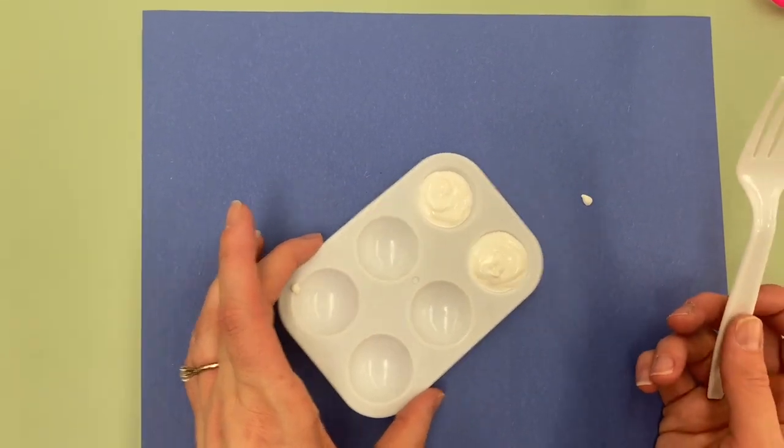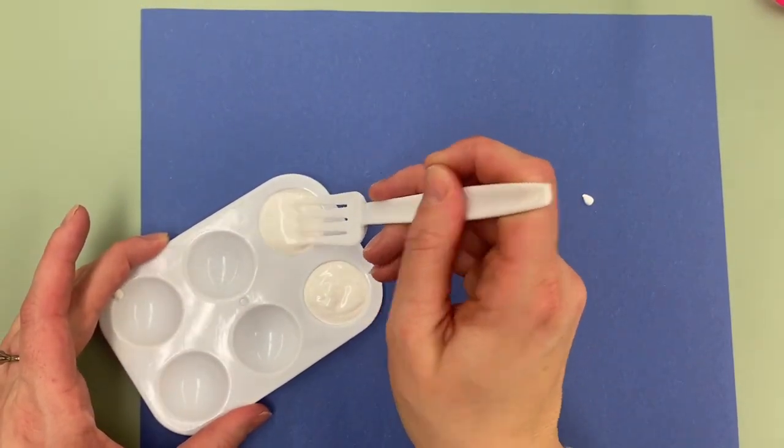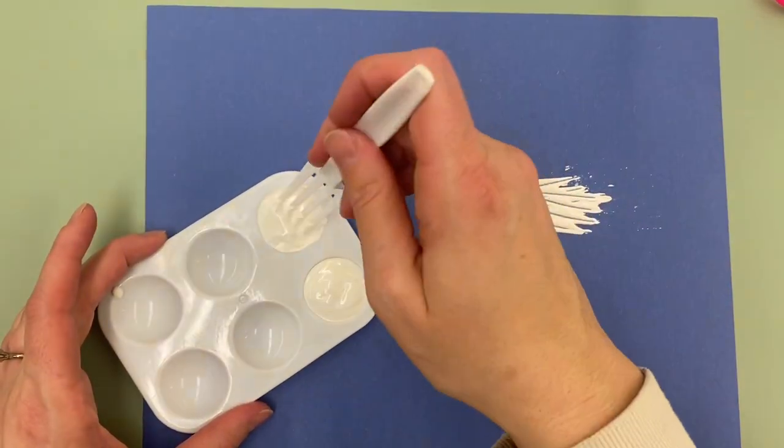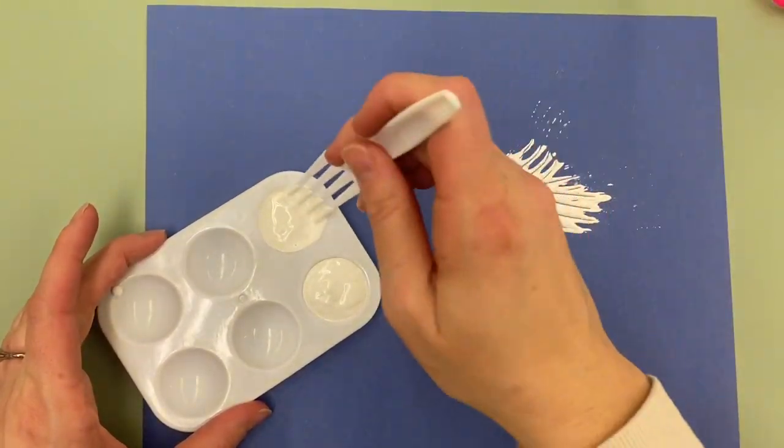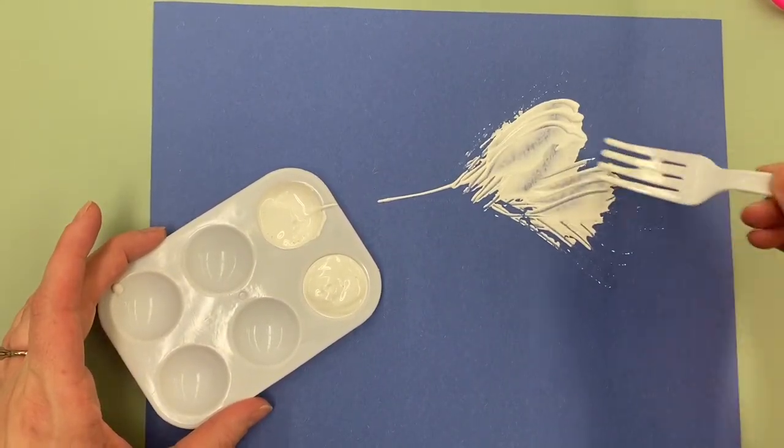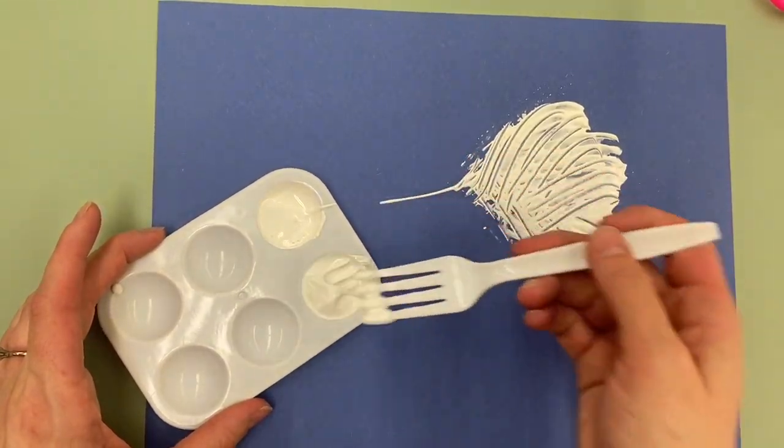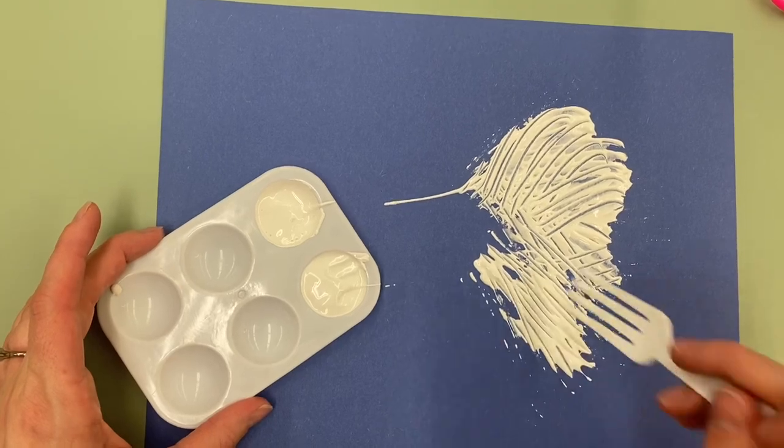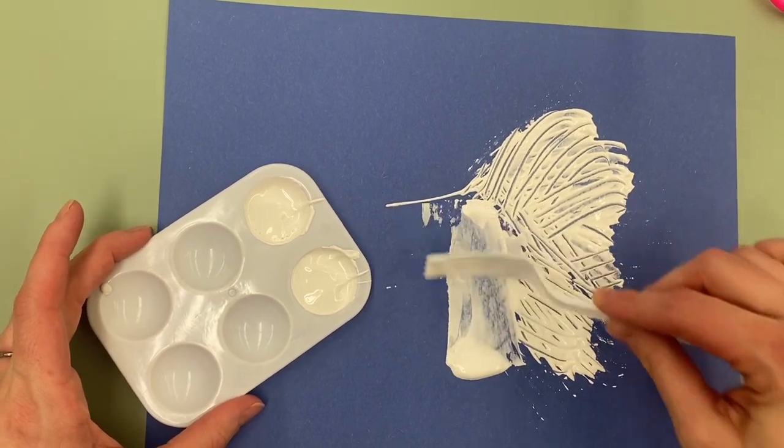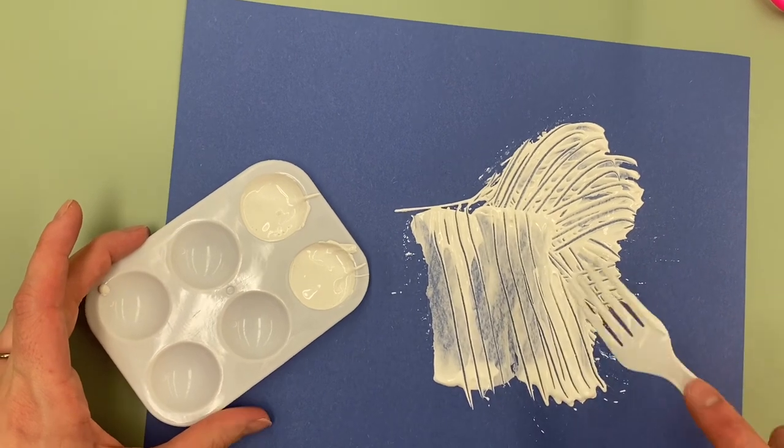All right, and then using your fork you're gonna paint some polar bear fur. So we're gonna make the head of the polar bear. And so I am gonna make kind of a rounded shape for the head and I'm just going to scrape some fur in like this.